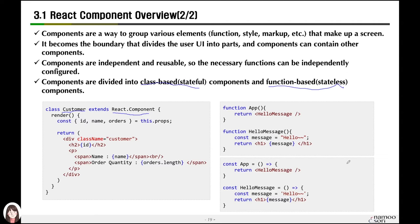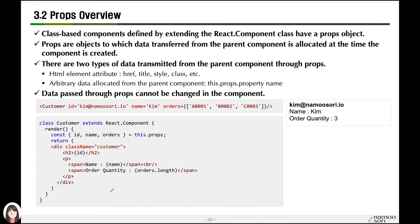For the time being, we will continue to make components based on class. There are basic elements that a class-based component has: the first is props, the second is state, and the third is lifecycle. From now on, we will look at these three contents in order — from props, to state, and then lifecycle. Let's look at the contents of props first. Props are defined by extending the component class of React, and class-based components automatically have a props object.